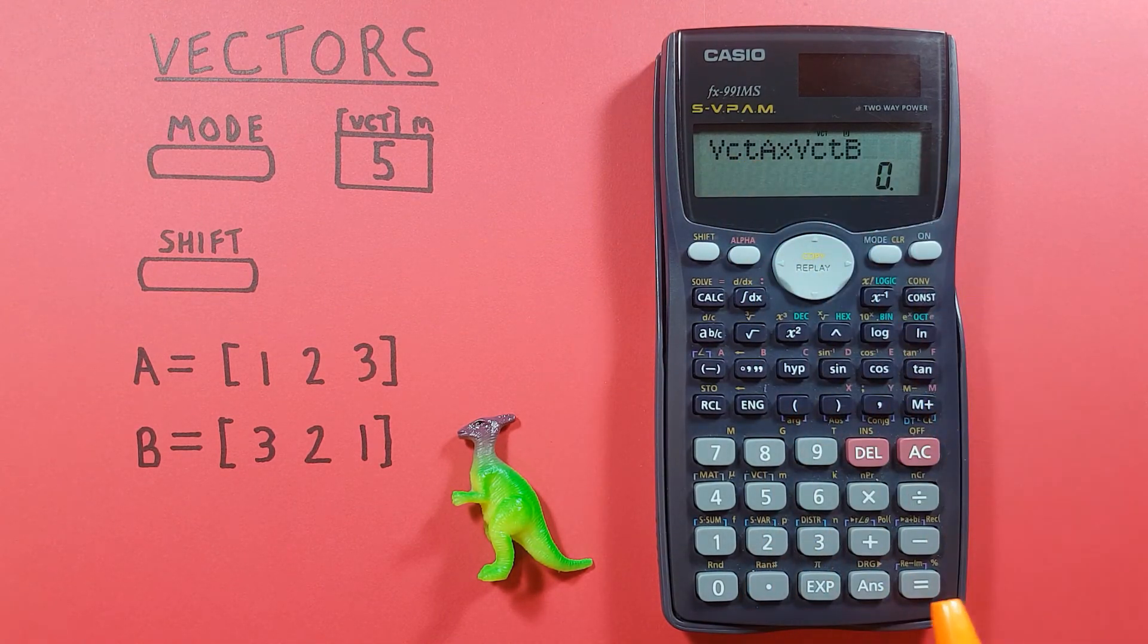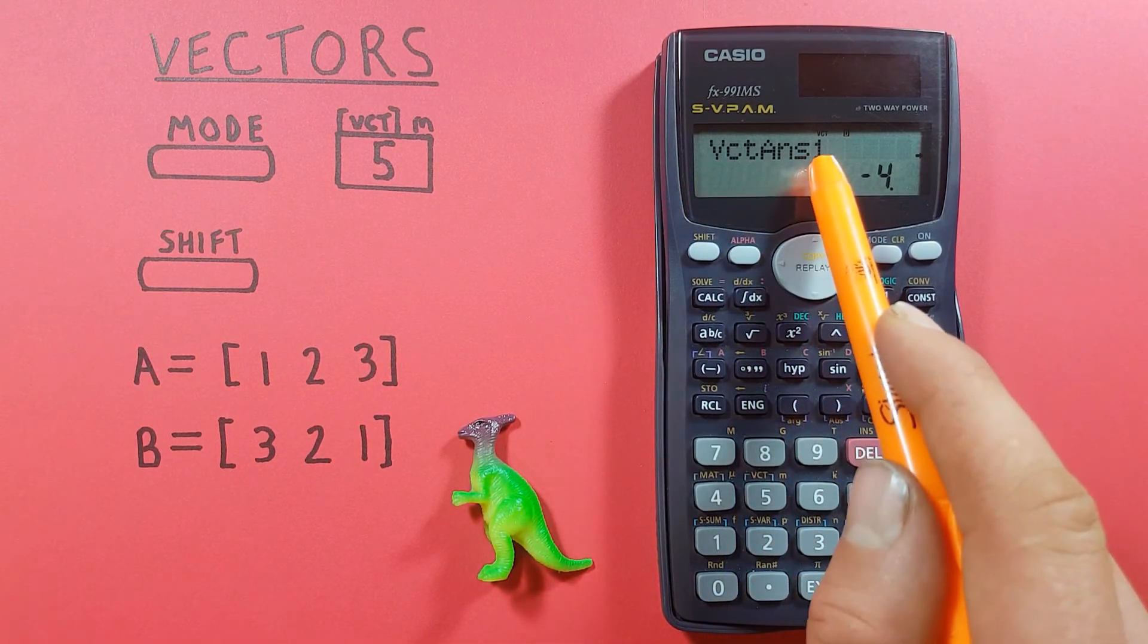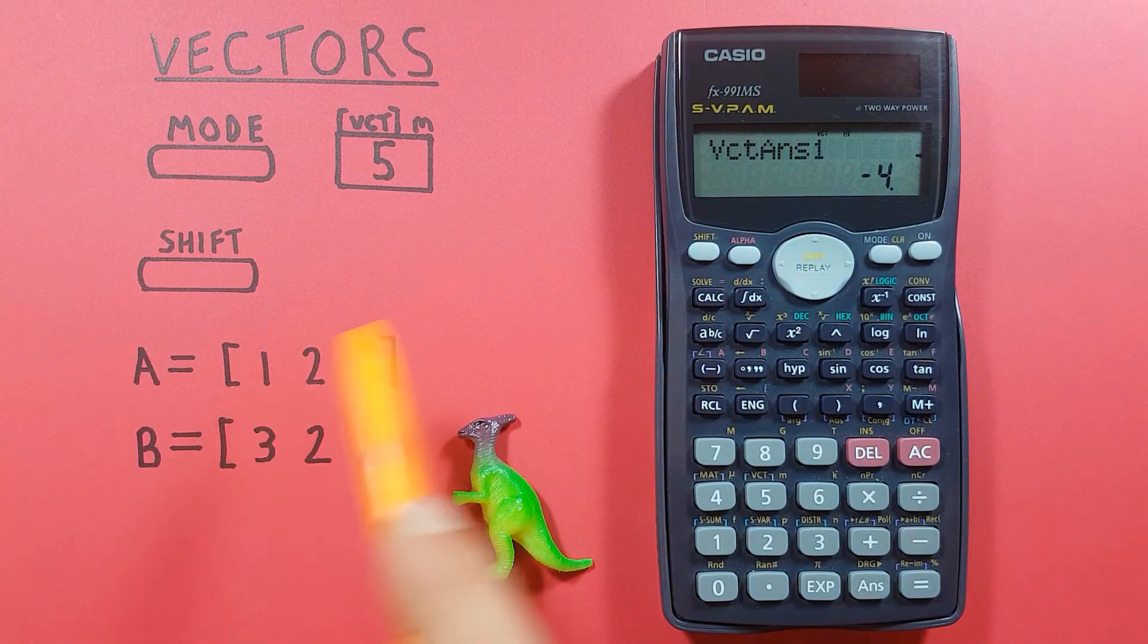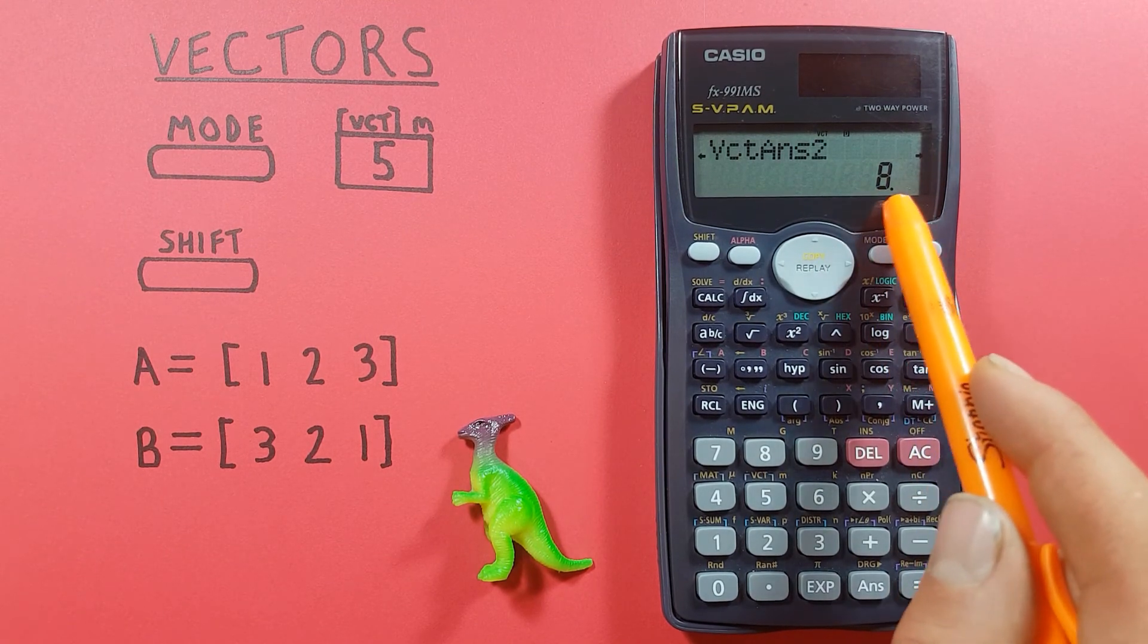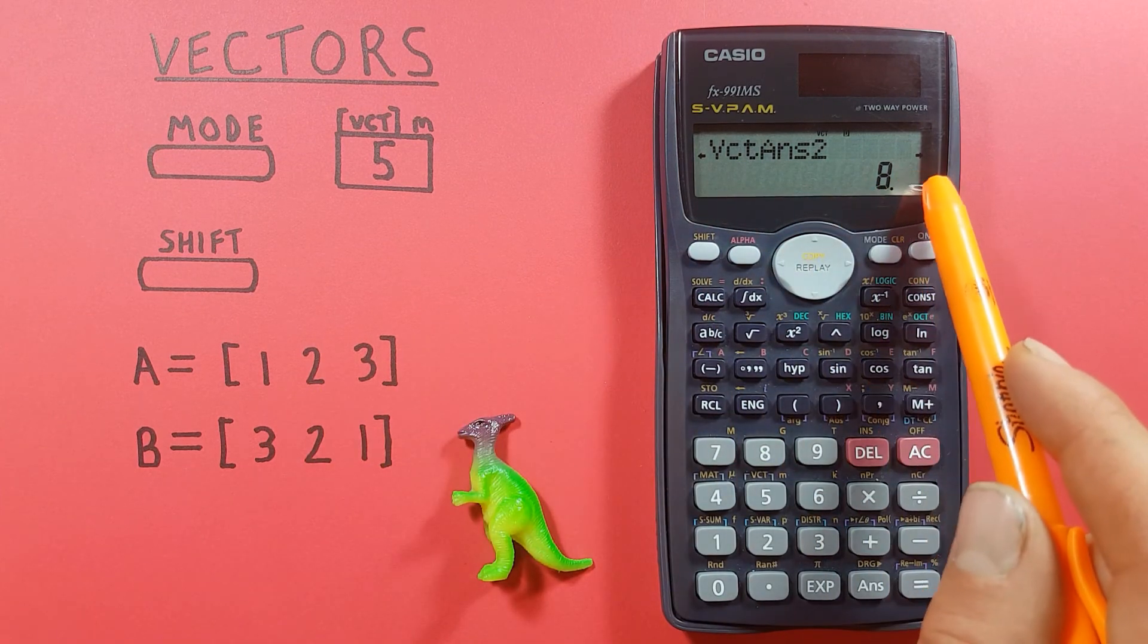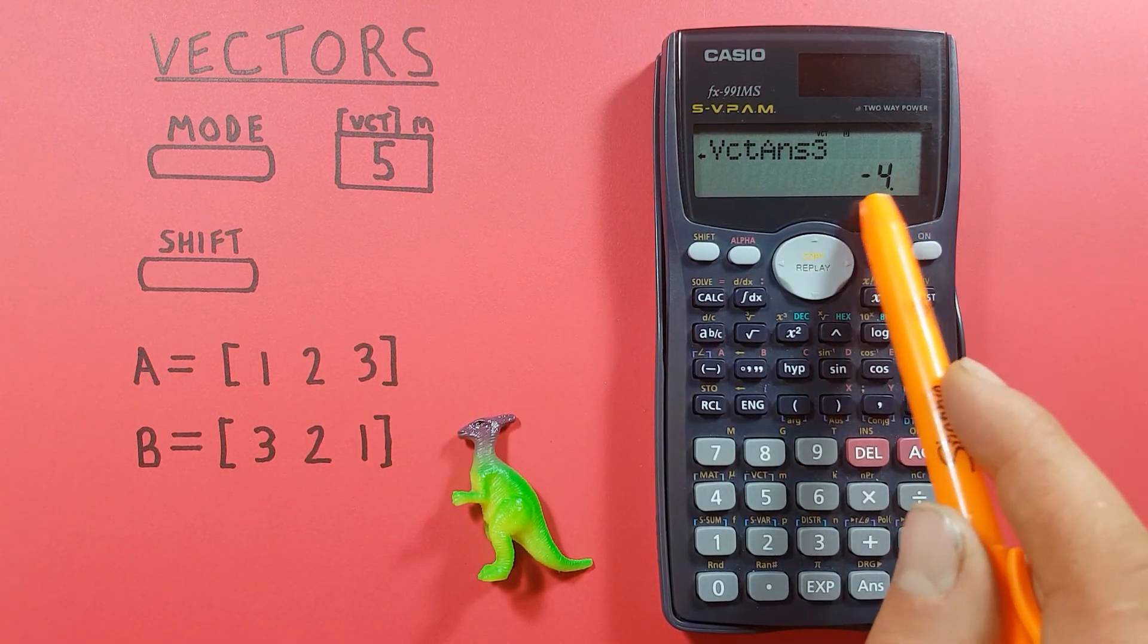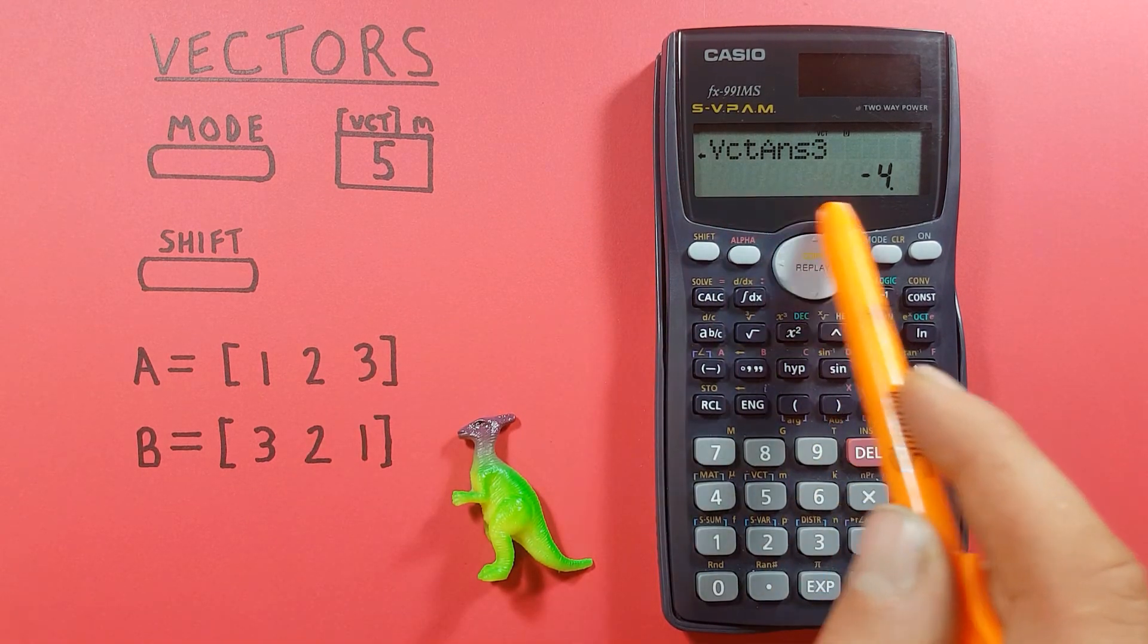There we go, and if we press equals you can see we get a vector answer 1, so that's our first dimension, remember, of -4. Scroll to the right we get 8 for our answer 2, so that would be this slot here, and write one more time we get a -4 for our third vector answer or third dimension.